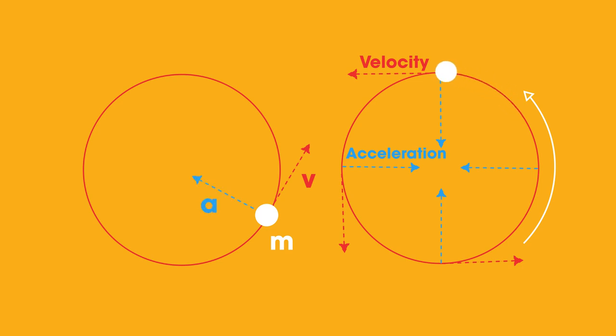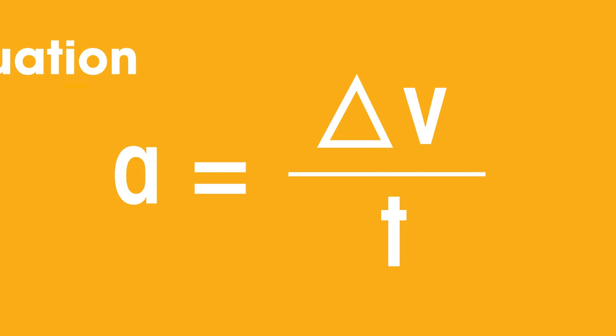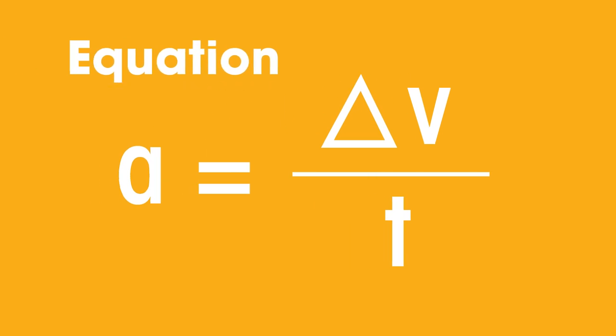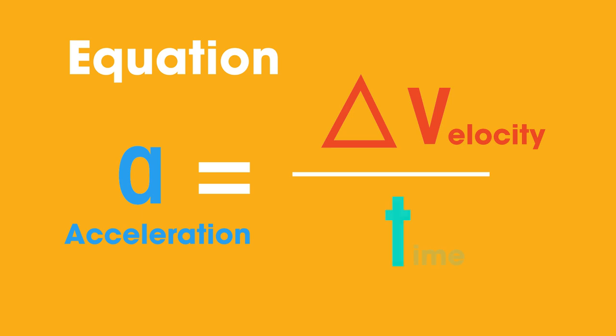But you may be wondering why is the object accelerating when the speed remains constant. To understand this, we must review the factors that cause velocity to change. As you know, a change in velocity results in acceleration from this equation: acceleration equals the change in velocity over time.